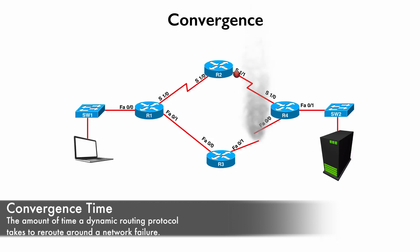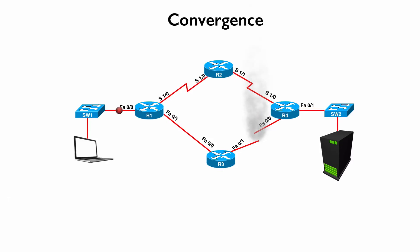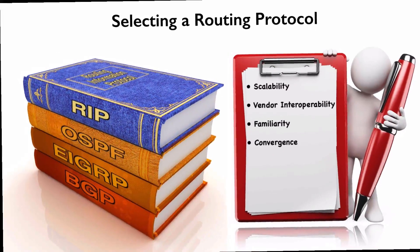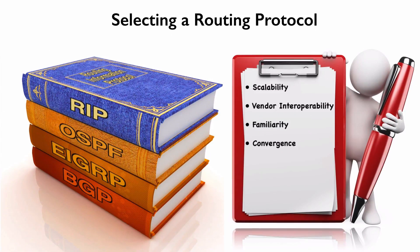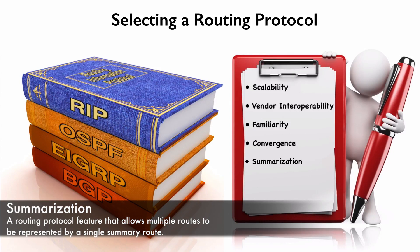Convergence tends to be really fast with OSPF and EIGRP — typically on the order of just a few seconds — while RIP or BGP could take minutes to converge. In larger networks, summarization might also be a requirement: can a routing protocol represent multiple individual networks as a single summary route?